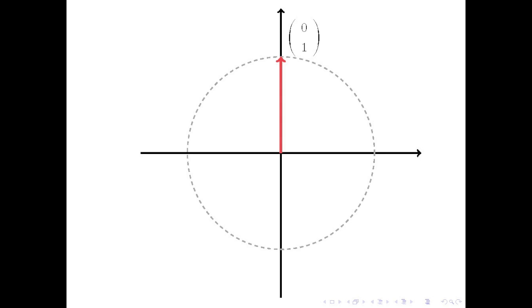We can do the same thing for the second unit basis vector. Rotating the vector through an angle theta yields the given result vector. We can again draw some right triangles, from which we determine that the result vector has components minus sine theta and cosine theta.